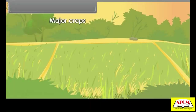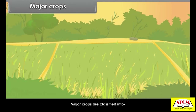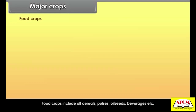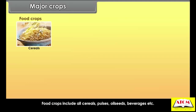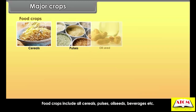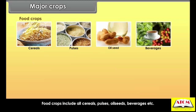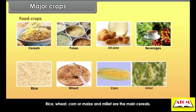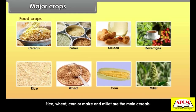Major crops are classified into food crops, commercial crops and beverage crops. Food crops include all cereals, pulses, oil seeds, beverages, etc. Rice, wheat, corn or maize and millet are the main cereals.